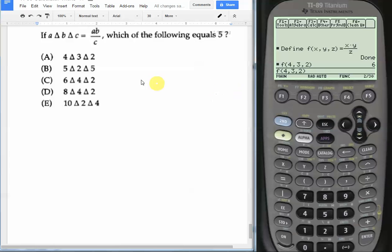Now let's try the next one. Choice B is 5 comma 2 comma 5. We will just go in here and enter 5 comma 2 comma 5. This yields an output of 2, which is not the answer 5.